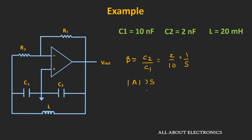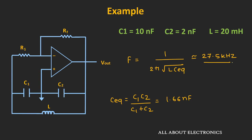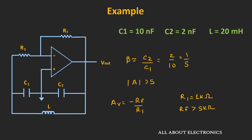Now let us find the gain for sustained oscillations. The feedback fraction β equals C2 divided by C1, which in this case is 1/5. So the amplifier gain must be more than 5. The op-amp is in inverting configuration, so the gain is minus Rf divided by R1. Considering only the magnitude, if R1 = 1 kΩ, then Rf must be more than 5 kΩ. Using these expressions, we can design a Colpitts oscillator for the desired frequency and set the amplifier gain to achieve sustained oscillations.